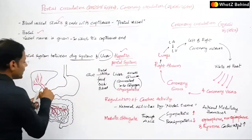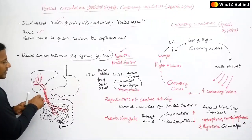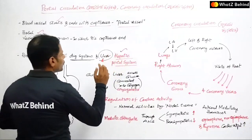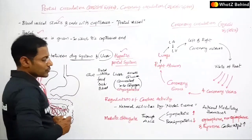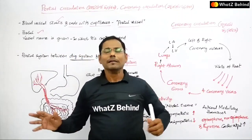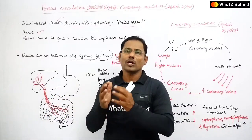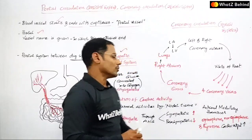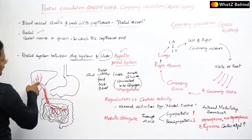So we have blood capillaries and a portal vein capillary. When we trace this to the liver, we call it the hepatic portal system. Through this system, absorbed food materials — glucose, amino acids, and glycerol — are transported from the digestive system to the liver via blood circulation through the hepatic portal vein.